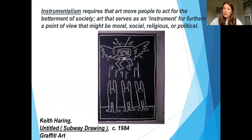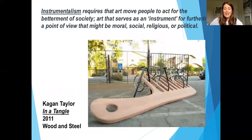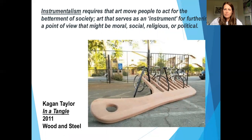Another example is a Keith Haring piece. When we look at this, we see little figures with their arms stretched up, almost worshiping that television. Think about what the artist is trying to say with the way he depicts those arms in the air and the wings out. And then our last instrumentalism example is a Kagan Taylor piece titled Entangle. This is kind of a 'for improvement of society' piece — it's functional, it serves a purpose, but we still consider it art. It does improve society in some way, which is why we consider this instrumentalism.